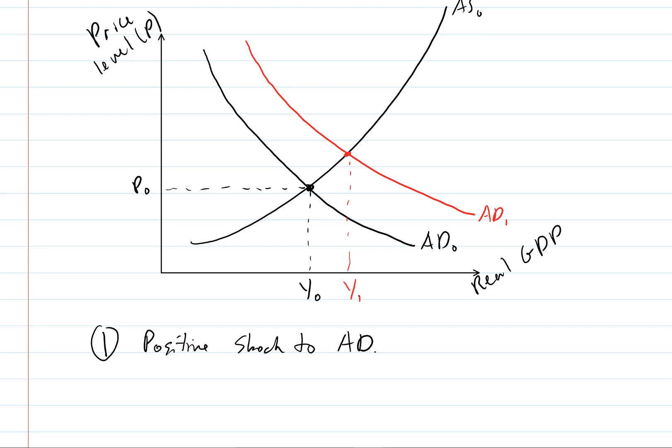We can label that Y1. And we can look at the new price level by just going over to the price axis and seeing what our new price level is in equilibrium after this aggregate demand shock. So both price level and real GDP increase.